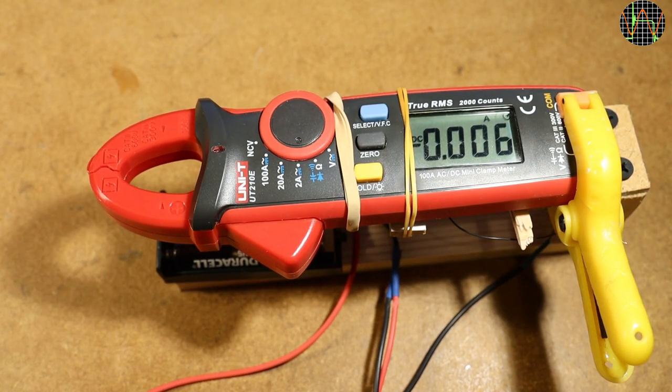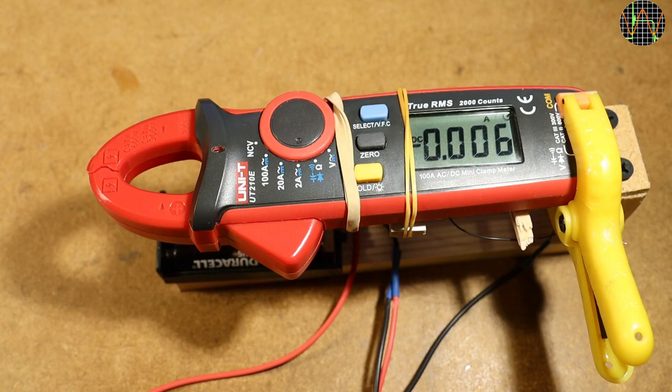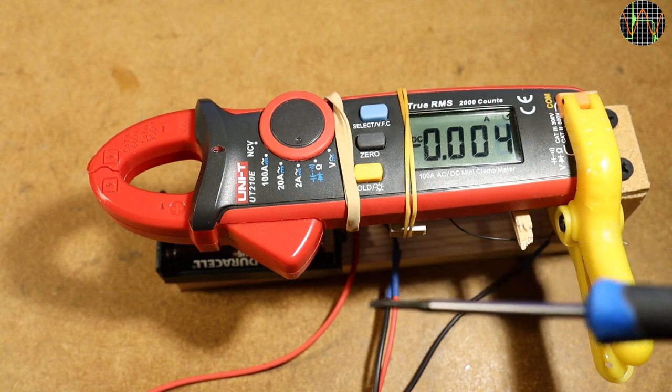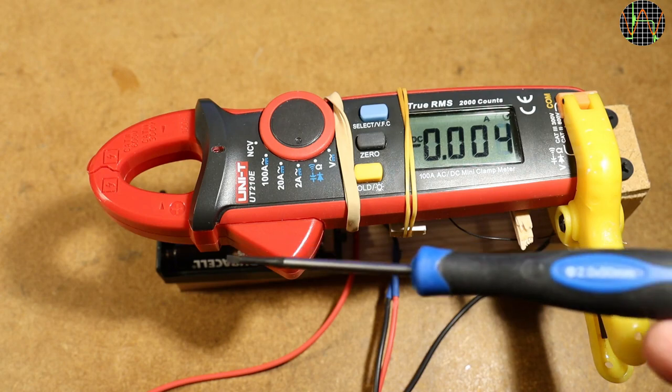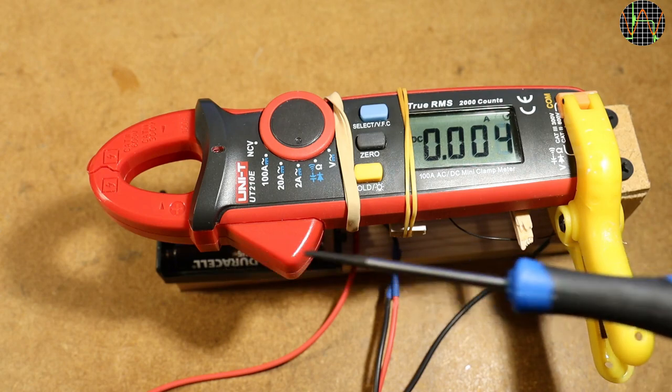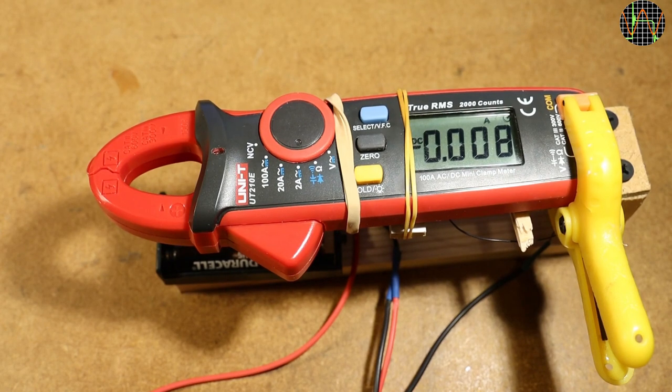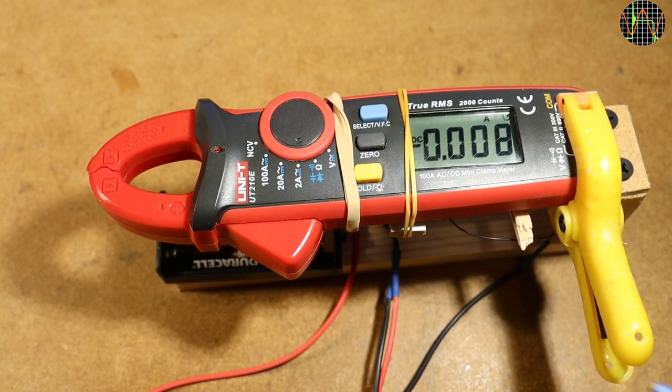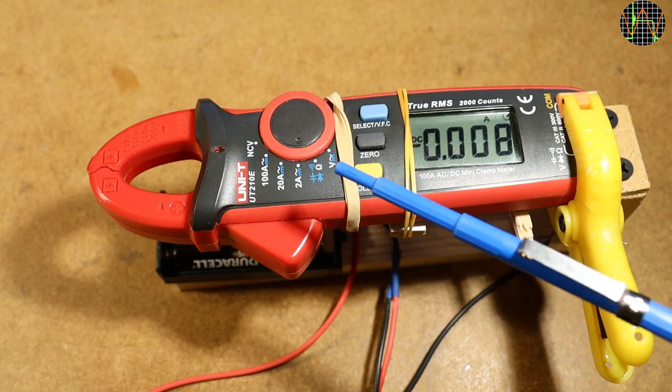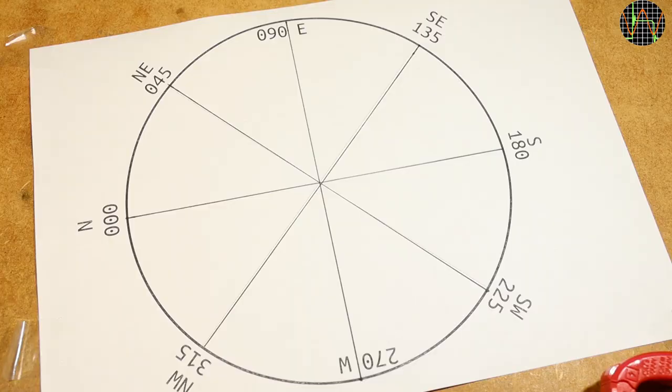Firstly, no magnets must be anywhere in the area where the alignment is taking place. Here I am moving a reasonably strong neodymium magnet half a meter distance away and the meter still picks up that field. The same is true for the tool that you use to adjust the trimmers. It must not be magnetic. If necessary, demagnetize it until the meter shows no effect if you bring it close. There are special tools for adjusting trim pots but even these should be checked.